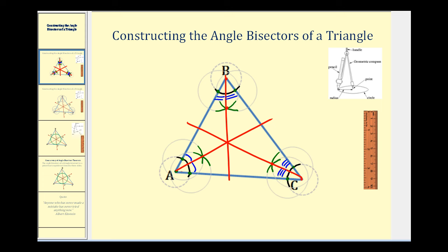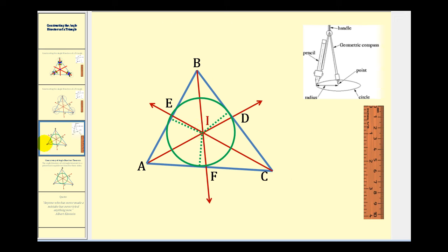Notice that the angle bisectors intersect in one point. This is called the point of concurrency, and this point is called the incenter. The incenter is equidistant from the three sides of the triangle. The distance is the length of the segment perpendicular to the side of the triangle, not the length of the angle bisector. So these three perpendicular distances are all the same, which means we can inscribe a circle that fits nicely inside the triangle.